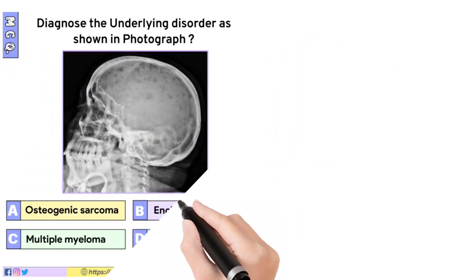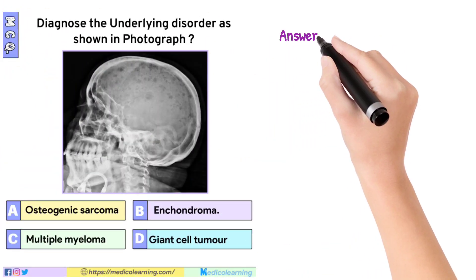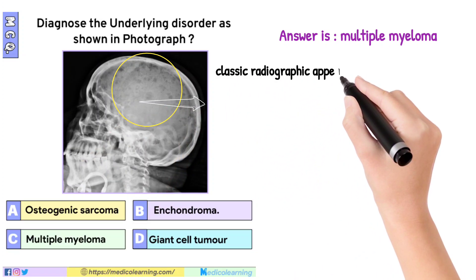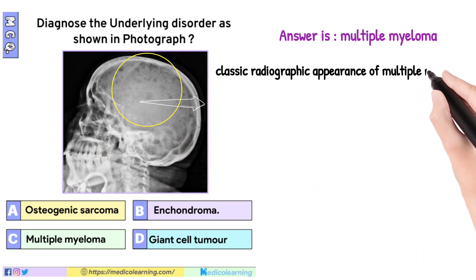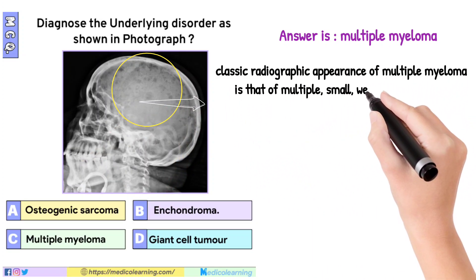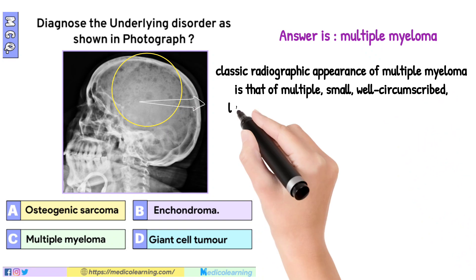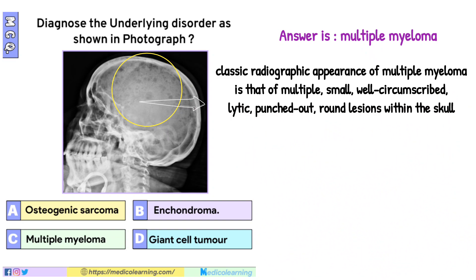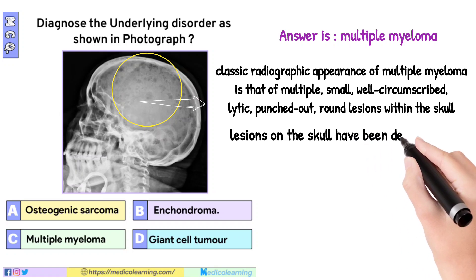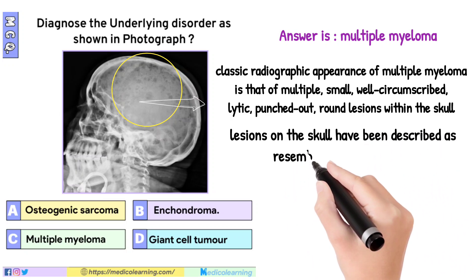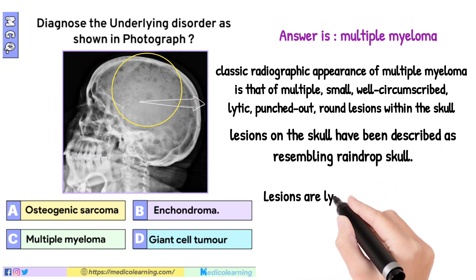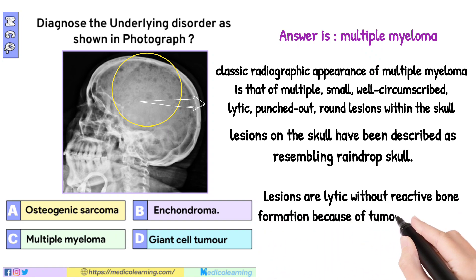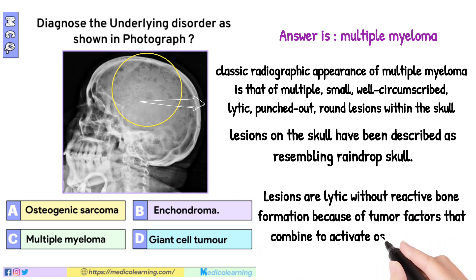In this question the answer is Multiple myeloma. The classic radiographic appearance of multiple myeloma is that of multiple small, well-circumscribed, lytic, punched-out, round lesions within the skull. Lesions on the skull have been described as resembling raindrop skull. Lesions are lytic without reactive bone formation because of tumor factors that combine to activate osteoclasts and inhibit osteoblasts.